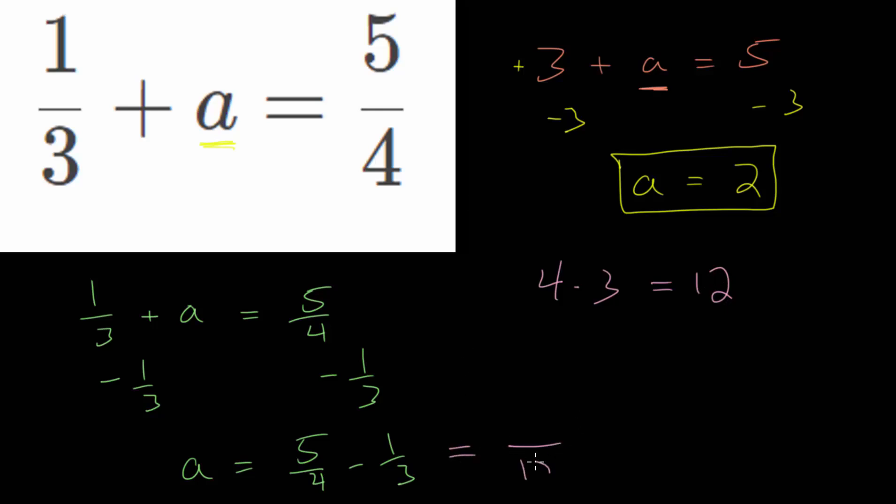So let's rewrite these with denominators of 12. And notice that we multiplied this 4 by 3 to get to 12. So we need to do the same to the numerator. We multiply top and bottom by 3. So this numerator is now 15. And for this fraction, this denominator of 3 was multiplied by 4 to get 12. So we need to do that to the numerator, meaning that we have minus 4/12.